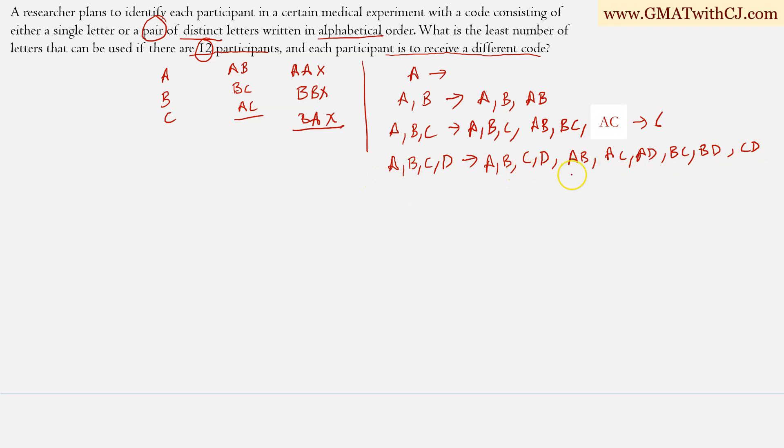So the way I have generated these codes is A, B, then A, C, then A, D. So A is consumed now, right? Then B, C and B, D. So B is consumed now. Then the only code remaining is C, D. So how many codes do I have? Oh, I still have just 10 codes. I still need to get 12 codes.